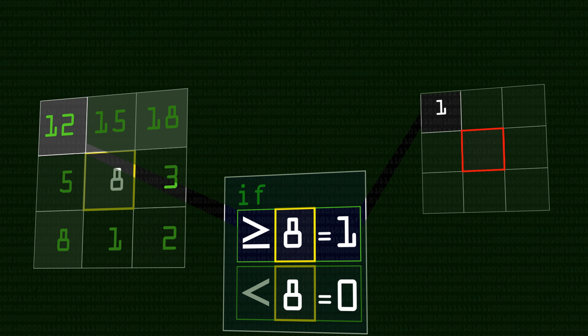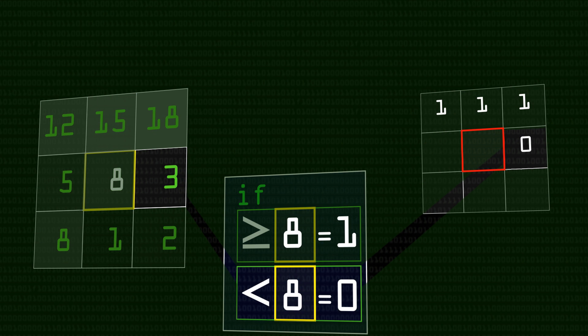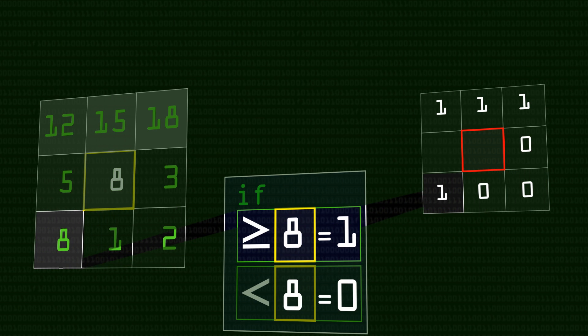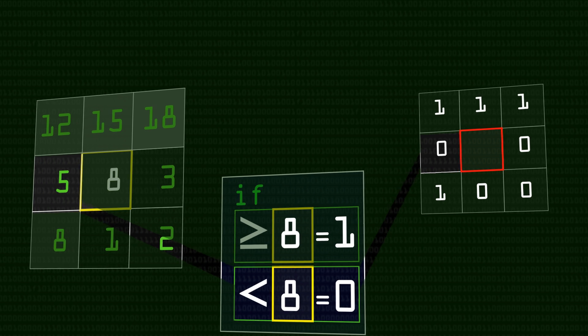So 12 is bigger than 8, that's a 1. 15 is bigger, 1. 18 is bigger. 3 is smaller than 8, so is 2 and 1. 8 is equal to 8, so that's a 1 again. And 5 is smaller. And then we're going to turn these eight bits, because they can only have a 1 or a 0 value, into one byte.